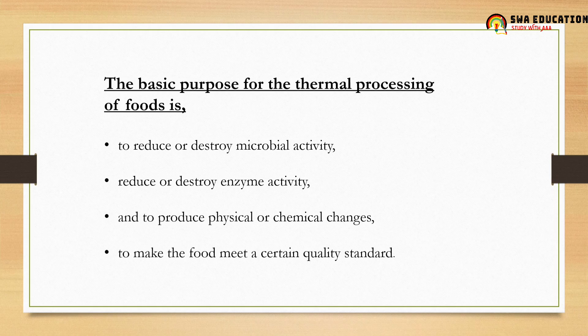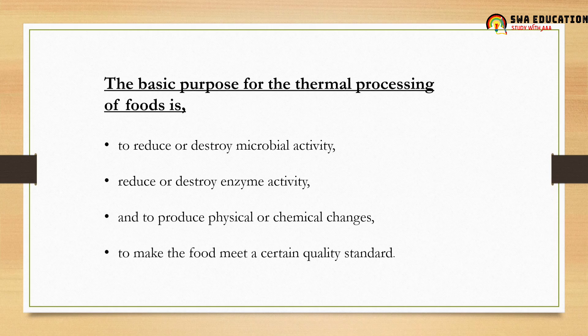The second basic purpose is to reduce or destroy enzyme activity. Fruits and vegetables contain enzymes that hasten the process of ripening. When we control those enzymes through heat, we can increase the shelf life of the product and improve its quality, helping us meet the increasing demand of the population.